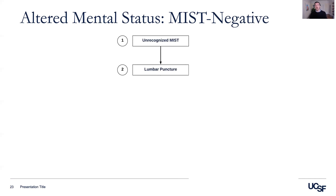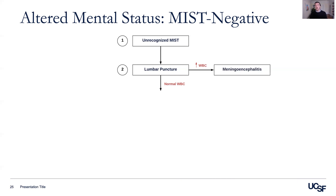If your MIST evaluation remains negative a second time, this is where a lumbar puncture can help guide us. Specifically, we can look at CSF pleocytosis. If we see an elevated white blood cell count on the lumbar puncture, we think about the different meningoencephalitides, such as an infectious meningoencephalitis, an autoimmune meningoencephalitis, or a paraneoplastic encephalitis.